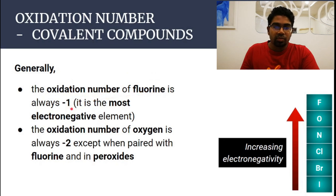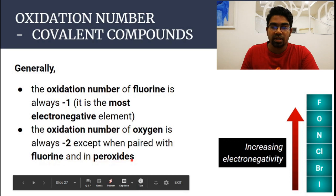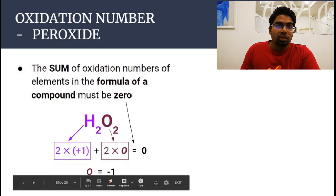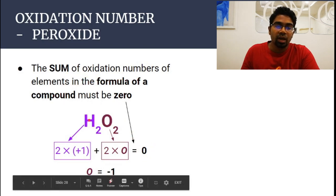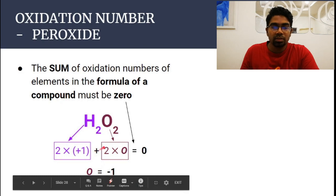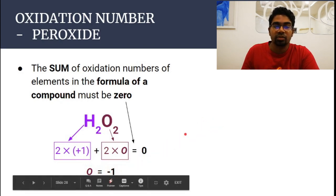Generally, fluorine is always minus one. Oxygen is always minus two, except when paired with fluorine. There is another exception for oxygen, which is in peroxides. For example, hydrogen peroxide H₂O₂: the sum of oxidation numbers equals zero, so plus one times two plus two times the oxidation number of oxygen equals zero, giving the oxidation number of oxygen as minus one instead of minus two.